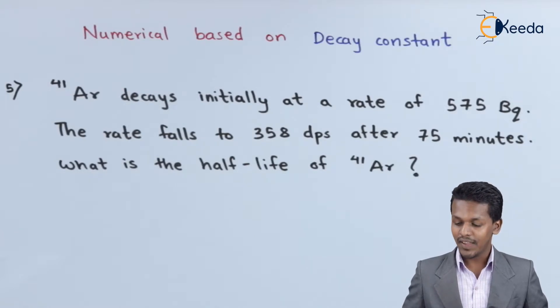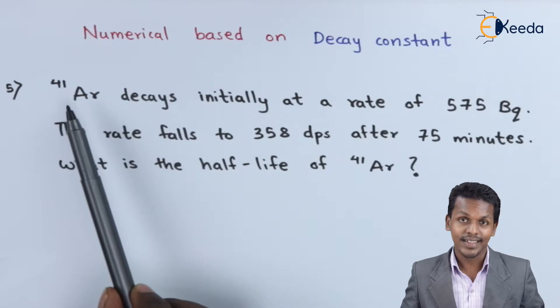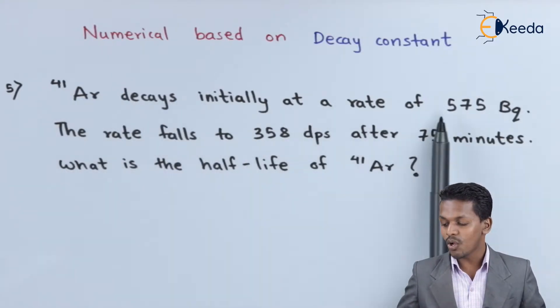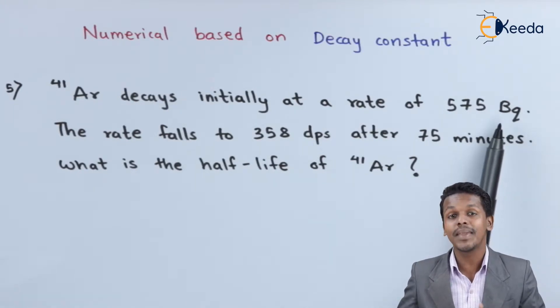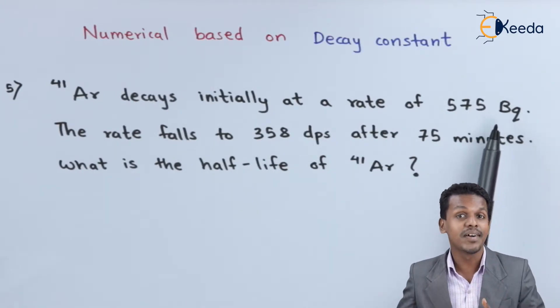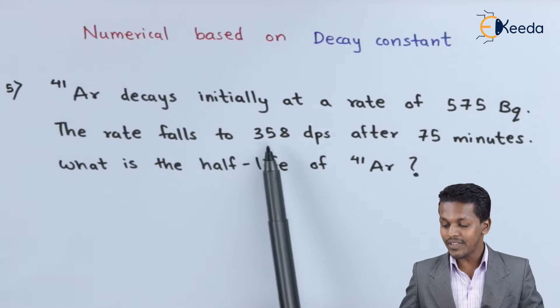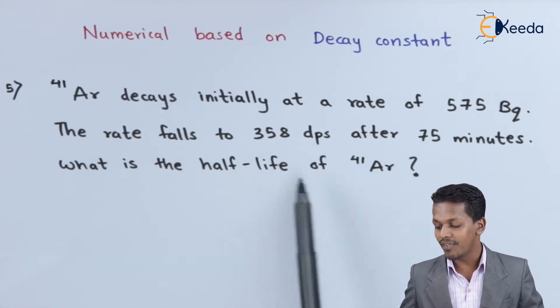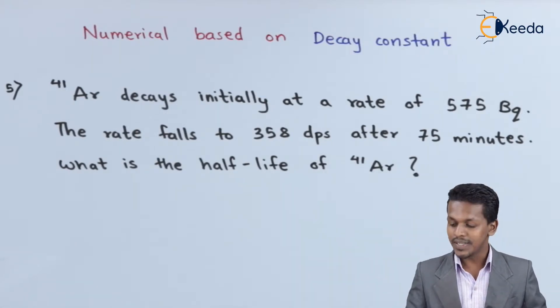This is the numerical we have: Argon-41. The 41 is the atomic mass number, which decays initially at a rate of 575 becquerel, which also means dps - disintegration per second. So we should not get confused whether this is a new unit. The rate falls to 358 dps after 75 minutes.